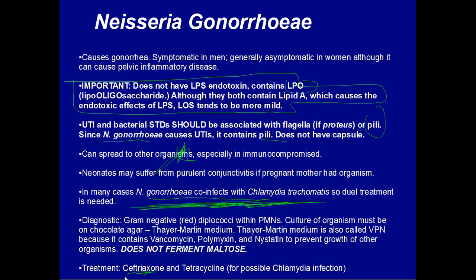Treatment for gonorrhea is a third-generation cephalosporin; treatment for chlamydia is tetracycline — they are treated together. For diagnosis, you can do a gram stain and will see red diplococci inside PMNs. You must culture the organism on chocolate agar — specifically the Thayer-Martin medium, also called VPN medium because it contains three antibiotics: vancomycin, polymyxin, and nystatin. These prevent growth of other organisms and select for Neisseria. Again: chocolate agar, VPN. Neisseria gonorrhoeae does not ferment maltose; Neisseria meningitidis does — that is how you distinguish between the two.